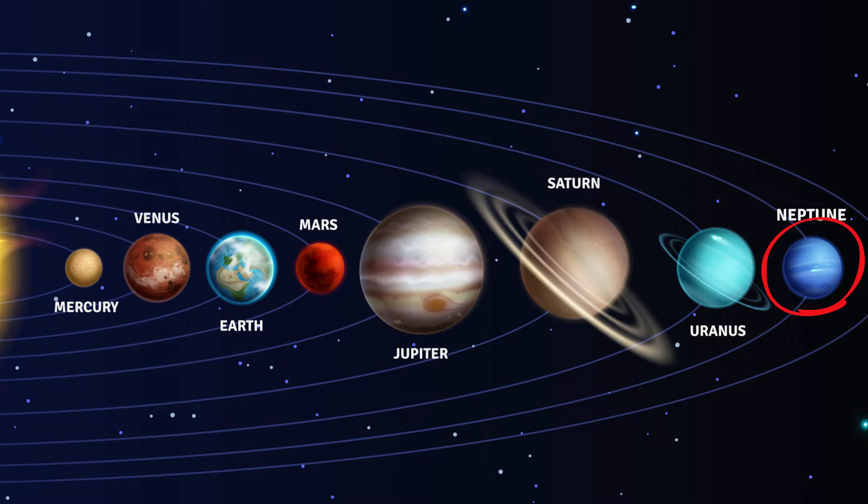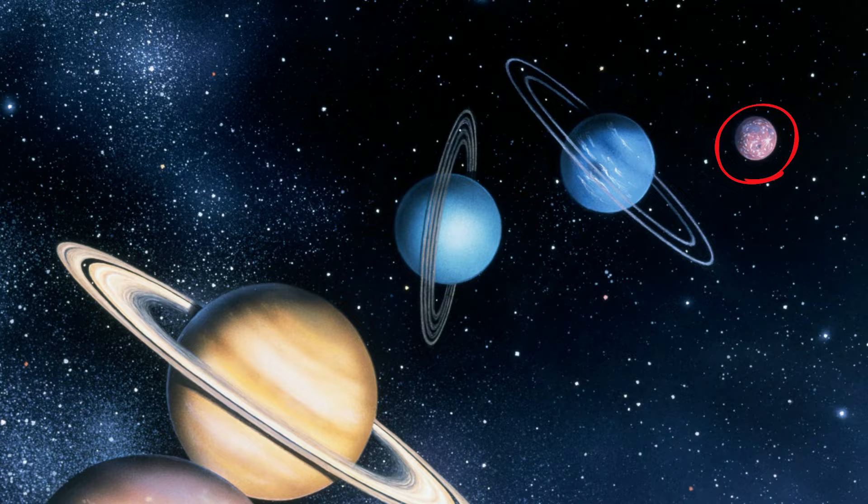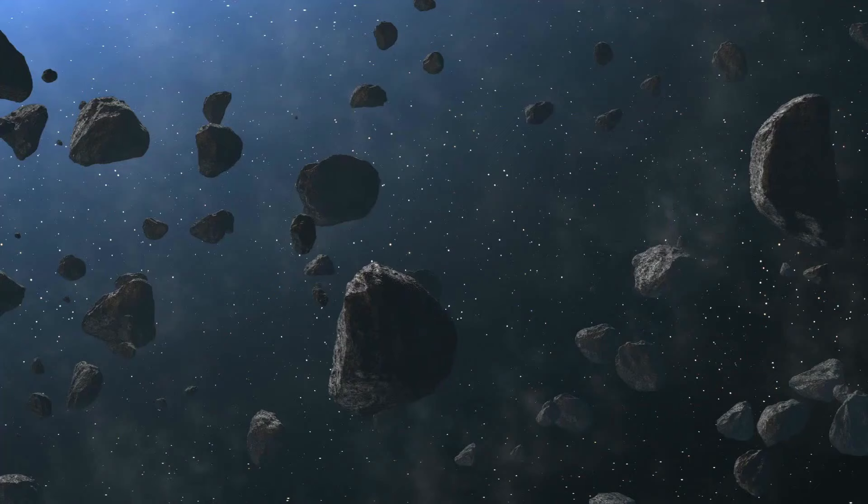Indirect objects include the moons that revolve around the planets. There are over 200 moons in our solar system. In addition, you have dwarf planets like Pluto and small solar system bodies, which are comets, asteroids, and trans-Neptunian objects.